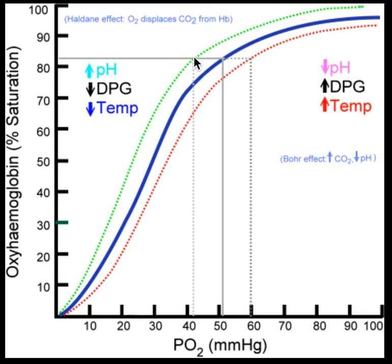A left shift is going to lock in the oxygen to the hemoglobin more — 'left shift locks in the oxygen' is the term to remember. It makes hemoglobin hold on to the oxygen just a little bit more. It's not permanently locked in, but it just makes hemoglobin hold on to the oxygen so that it doesn't leave quite as easily.